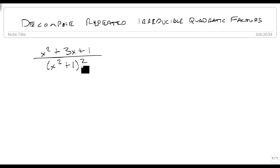This is our factor, and there's two of them. So we're going to get an x squared plus 1 squared, and we're going to get an x squared plus 1 by itself.